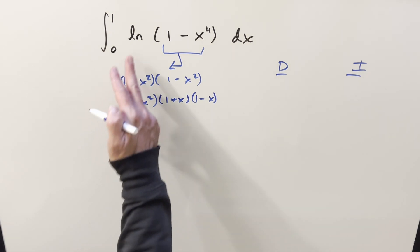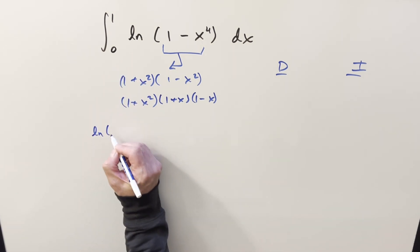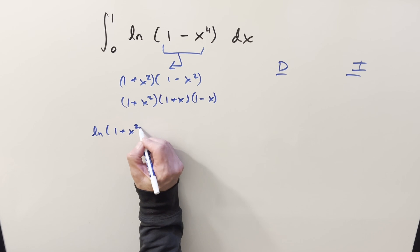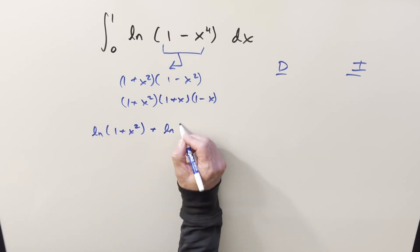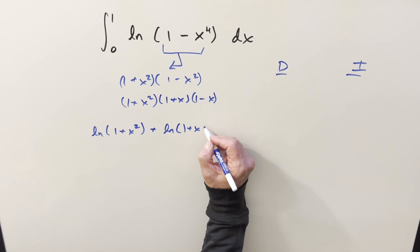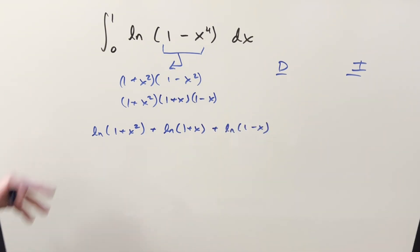And with this all being inside of the natural log, we can break this up with log properties and write it as natural log of one plus x squared plus natural log of one plus x plus natural log of one minus x. And then this way we can integrate this as three separate integrals.